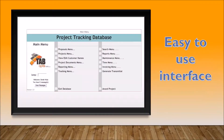Now let's look at some screenshots on what it can do. Here is the main menu of your TabOps database. Here you can see you have your proposal menu, projects menu, reporting, tracking, maintenance and invoicing. This is your main menu.